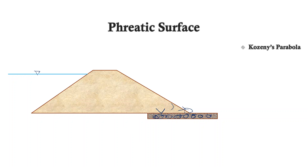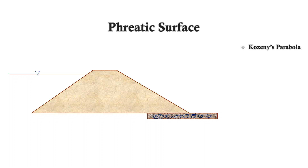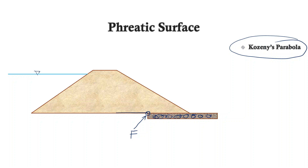Now, how to exactly draw this phreatic surface or the seepage line. It is said that it will follow an approximate theoretical parabola called the Casagrande parabola. Theoretically, the focus of the parabola will be the point where the bottom surface of the dam starts becoming permeable — in this case, the starting point of the drainage blanket. To draw the parabola we need to find some other information, given in the form of another point on the parabola.